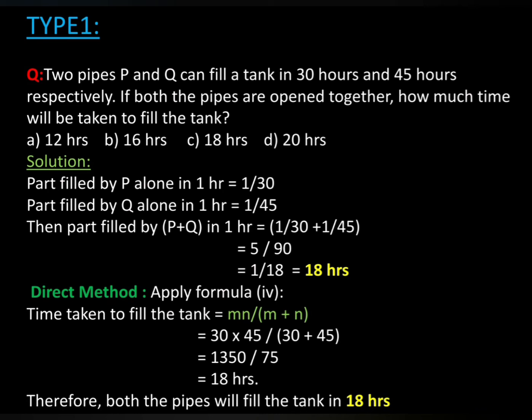Direct method: Apply formula. Time taken to fill the tank is mn by m plus n, equals 30 into 45 by 30 plus 45, equals 1350 by 75, equals 18 hours. Therefore, both the pipes will fill the tank in 18 hours. It is option C.